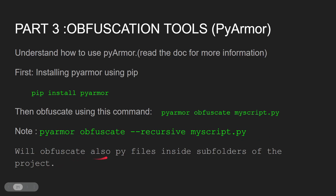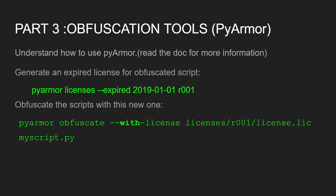The recursive option will also obfuscate Python files inside subfolders of the project. If you have a program with a lot of modules and Python files inside it, you can use recursive.